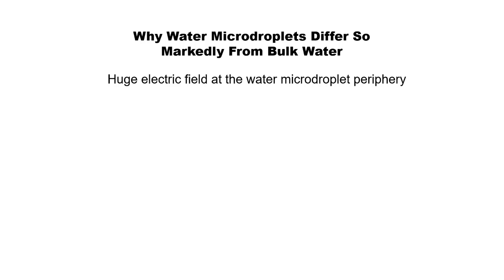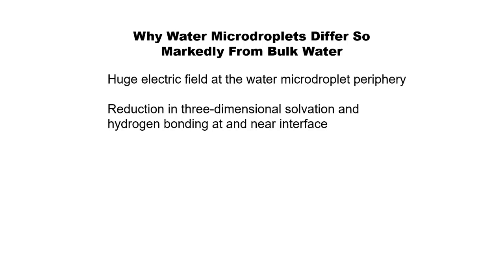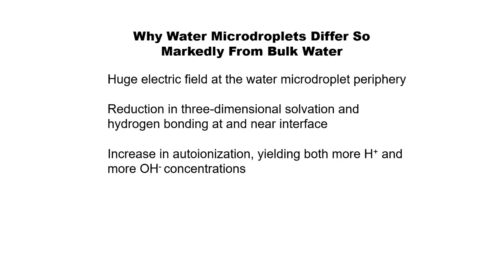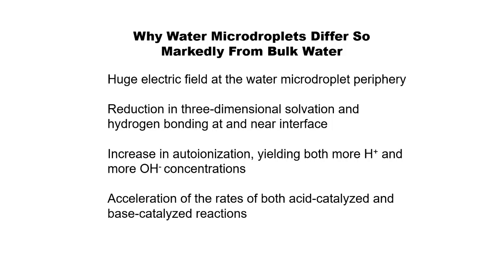Water microdroplets differ so markedly from bulk water because of this huge electric field. There is no longer three-dimensional solvation, which makes ions get closer to things and makes reactions go. Both acid-catalyzed and base-catalyzed reactions are accelerated — and when I say accelerated, people get excited by a factor of two change, but I'm talking about factors from about a thousand to more than a million. Water droplets are nothing like bulk water. Bulk water seems to be an inert, great solvent, but water droplets are highly reactive when you make them small.